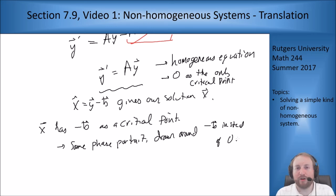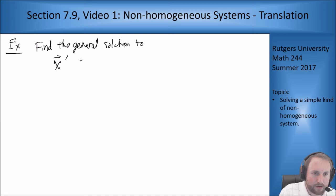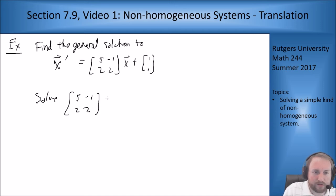Let's do a quick example just to show you how this works out because this is a pretty quick one to handle. So the example is find the general solution to x prime equals the matrix [5 -1; 2 2] times x plus [1; 1]. Our first thing we have to find is we have to find this vector b to undo the translation.